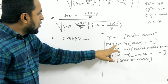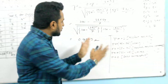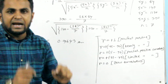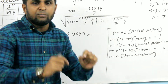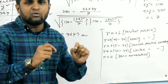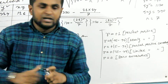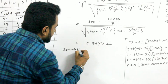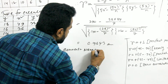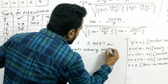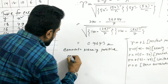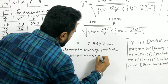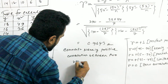0.9643 shows a positive correlation between X and Y. There is nearly a perfect positive correlation between the two variables.